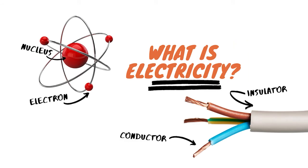We know that lighting instruments cast light onto the stage because they have lamps inside them. But what causes the lamps to turn on in the first place? It's what we call electricity. We all use it every day, but today we're going to take a closer look at what electricity is and what we need to know about it to do our lighting work in the theatre. Basically, electricity is the movement of electrons through a medium, and this movement can be used to do work such as moving a motor or turning on a lamp.